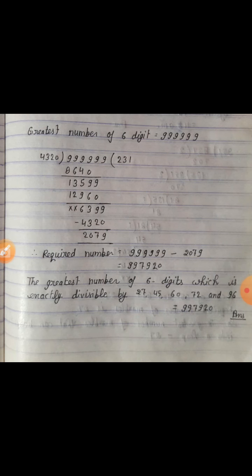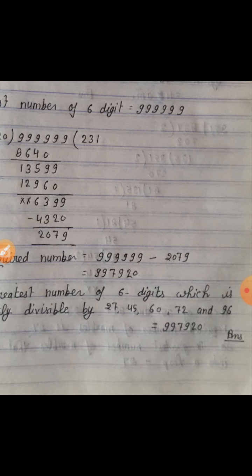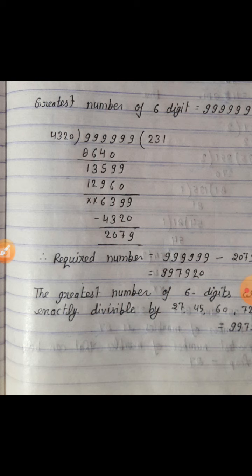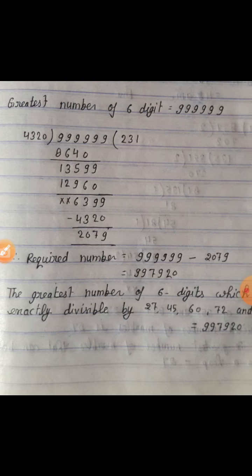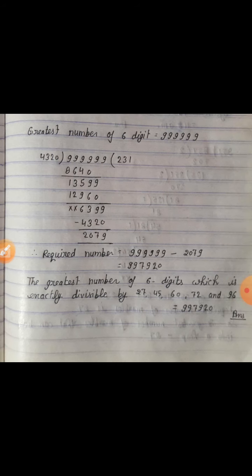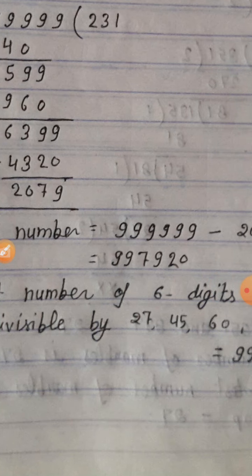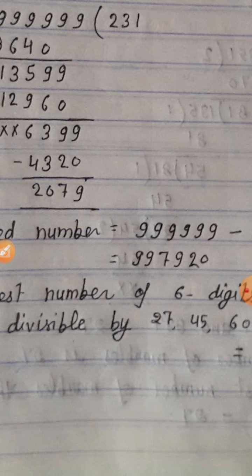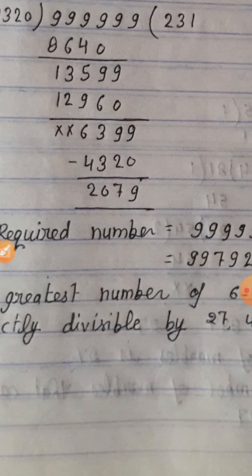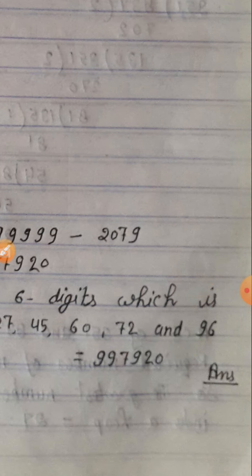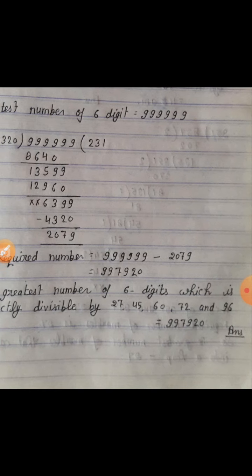LCM निकालने पर आता है 4320. Greatest 6-digit number = 9,99,999. अब 9,99,999 को 4320 से divide करते हैं — remainder आता है 2079. Required number = 9,99,999 − 2079 = 9,97,920. The greatest six-digit number exactly divisible by 27, 45, 60, 72, and 96 is 9,97,920.